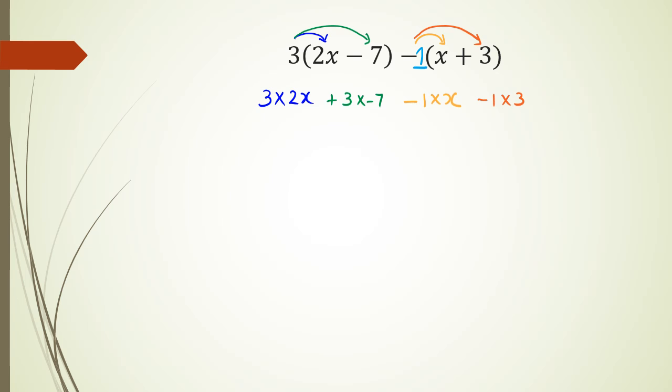If we were to combine all of these things now, or actually just get rid of the multiplication sign, 3 times 2x is 6x, 3 times negative 7 is negative 21, negative 1 times x is negative x, negative 1 times 3 is negative 3. Now I've got to look at my like terms. I've got 6x and negative x, and of course my two numbers.